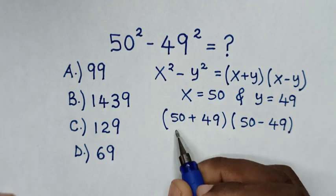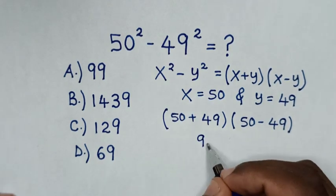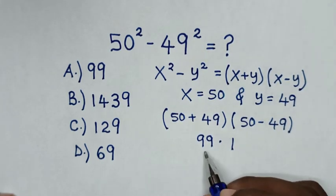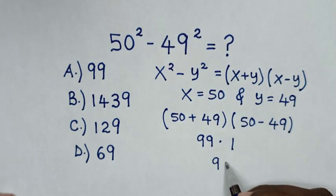Then this plus this is 99, times this minus this is 1. So 99 times 1 is 99.